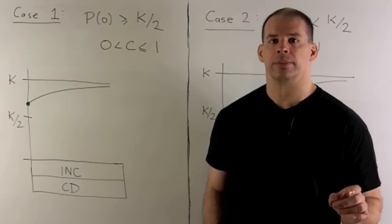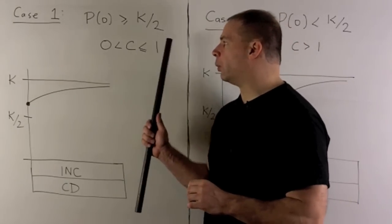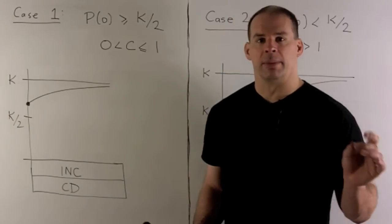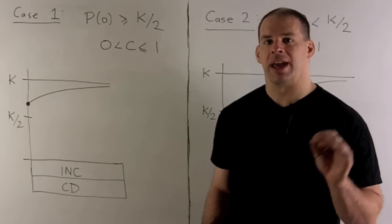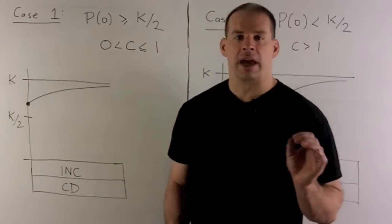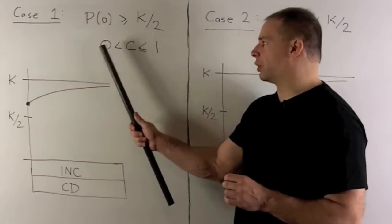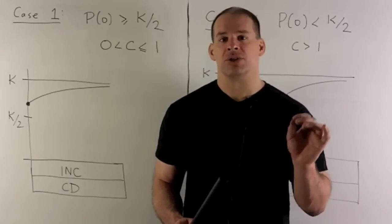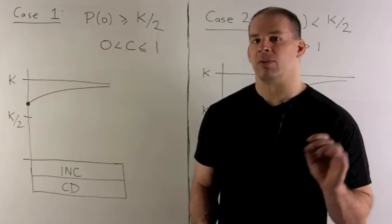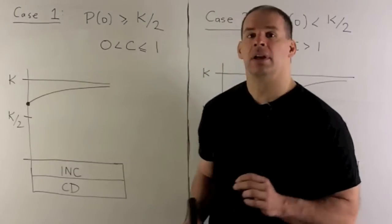Let's look at the graphs. In the first case, the initial population is greater than or equal to K over 2, meaning C is between 0 and 1 inclusive. On this region we're increasing and concave down, with a horizontal asymptote at y equals K as t goes to infinity. That doesn't look like an S-curve for positive t, but it actually is if we allow negative values of t — the inflection point is back there, and as t goes to minus infinity we get the horizontal asymptote at 0.